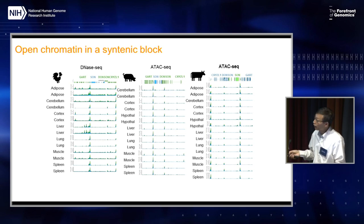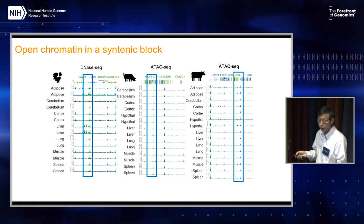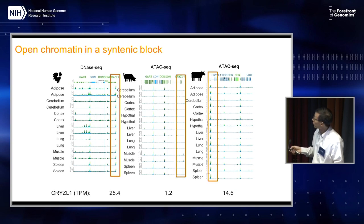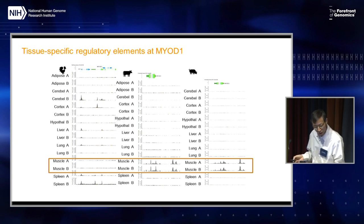Here is another example for open chromatin in syntenic blocks, looking at three examples between chicken, pig, and cattle. You can see all three species have open chromatin in one example, but in another example it is only conserved between cattle and pig, but not chicken. Another example is conserved between chicken and cattle, but not in pig. A third example, about tissue specificity, shows conservation between pig and cattle, but not in chicken.